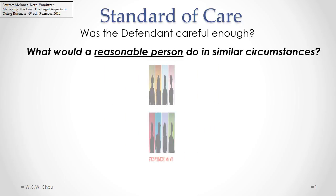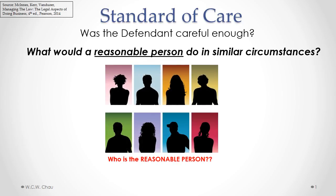Now, that begs the question: who is this reasonable person? We don't know who exactly this person is. It could be male, it could be female. We don't know what their experience or upbringing is, but let's find out some clues that courts have given us as to who is the reasonable person.